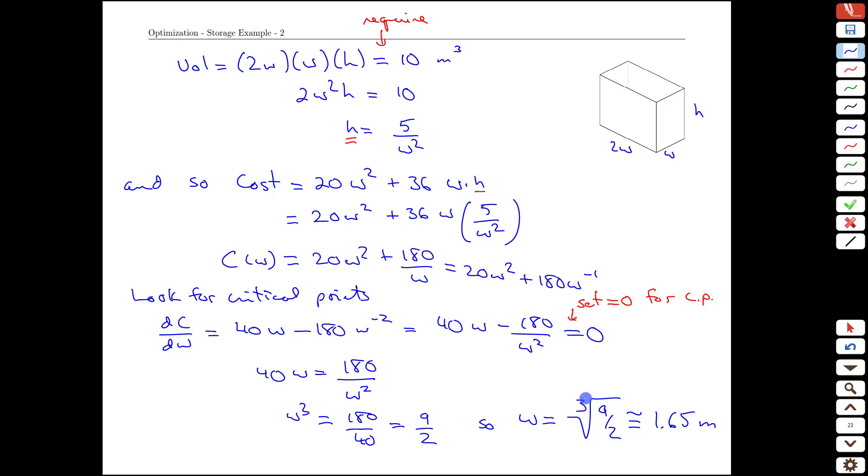As an aside, remember that cube roots don't have plus or minuses. Square roots, there's two possible solutions, but cube roots, the sign comes along with it. If we take a cube root of a positive number, we get a positive number back. All right, we found our optimum value or at least our critical point. We haven't shown that it's a perfect optimum yet.